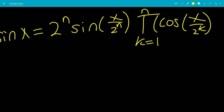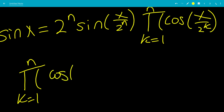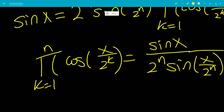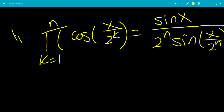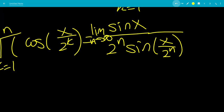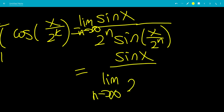Now we can divide to isolate the product. So we have the product from k equals 1 to n of cosine of x over 2 to the k, equals sine x over 2 to the n times sine of x over 2 to the n. What we're looking for is the limit as n goes to infinity, so let's take the limit on both sides. Since sine x has nothing to do with n, we can move the limit to the denominator: sine x over the limit as n goes to infinity of 2 to the n times sine of x over 2 to the n.